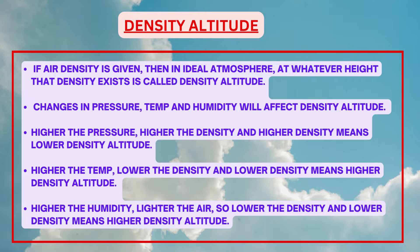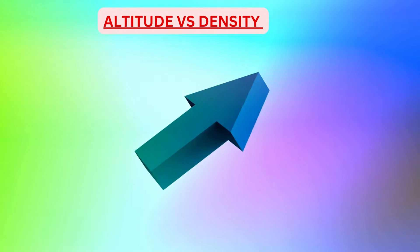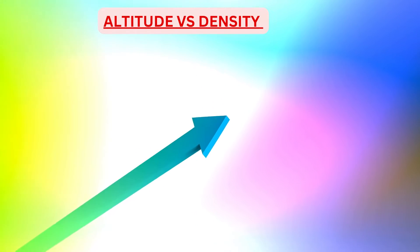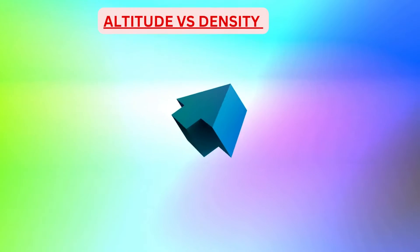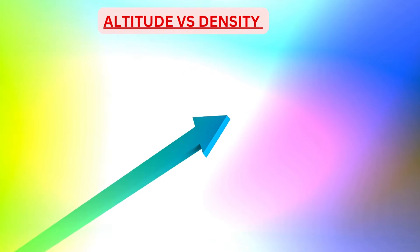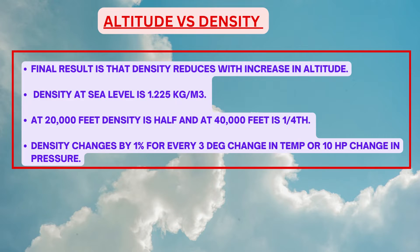Altitude versus density: as we go upwards, pressure reduces so density should reduce, but temperature also reduces, which would increase density. Both effects are opposite, but the effect of pressure reduction is dominant, so the final result is that density reduces with increase in altitude. Density at sea level is 1.225 kg/m³; at 20,000 feet it is half of that; and at 40,000 feet it is one quarter of sea level density. Density changes by 1% for every 3°C change in temperature or 10 hectopascal change in pressure.